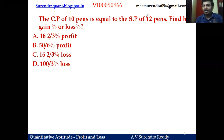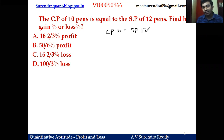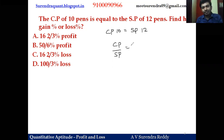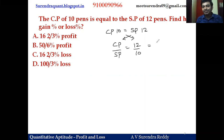Write the same information on paper: CP of 10 pens is equal to SP of 12 pens. Now try to make a CP to SP ratio. Taking SP to one side and 10 to the denominator, this gives 12 by 10, which simplifies to 6 by 5. So the CP to SP ratio is 6 is to 5.